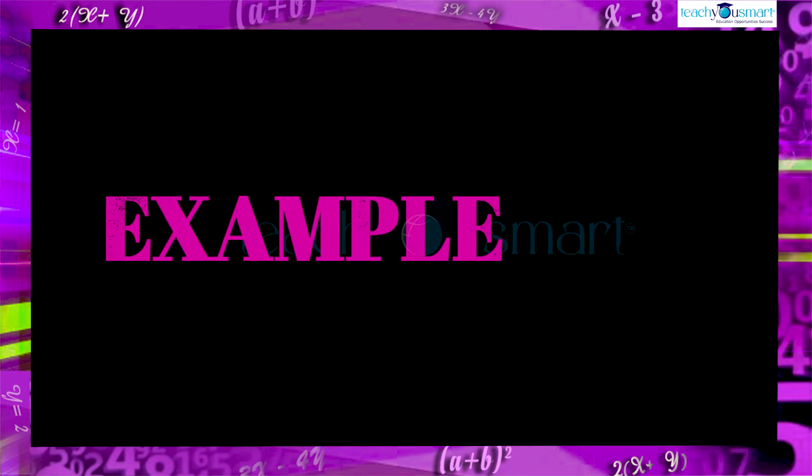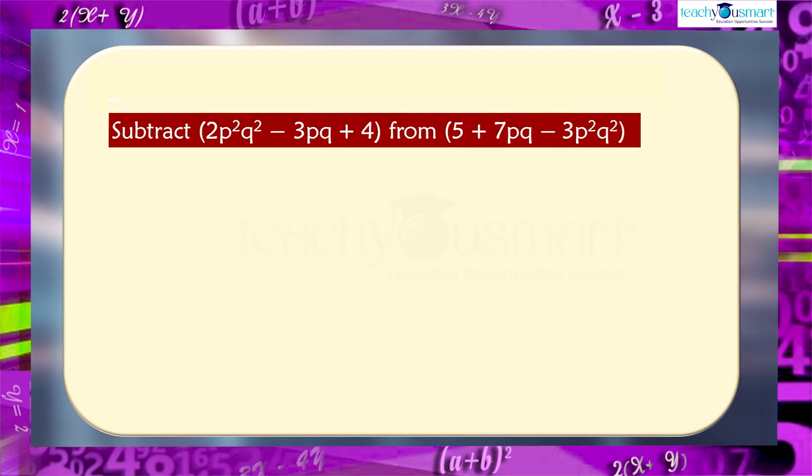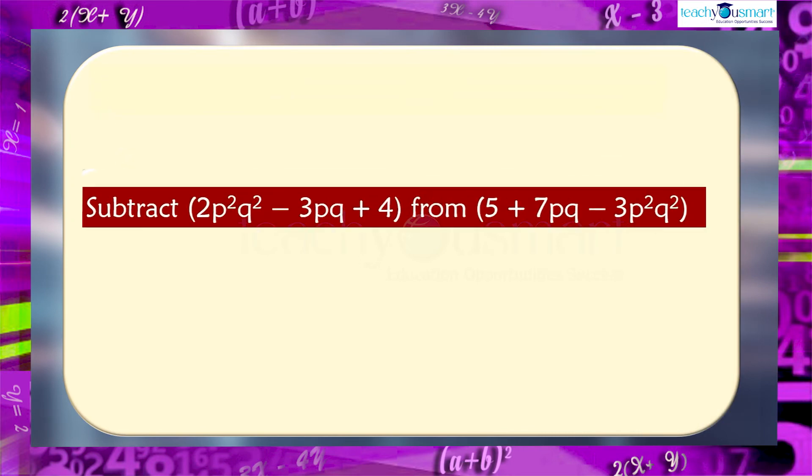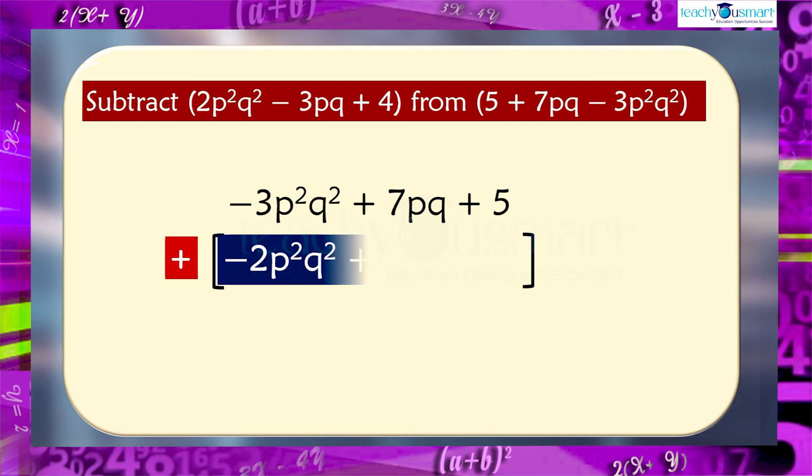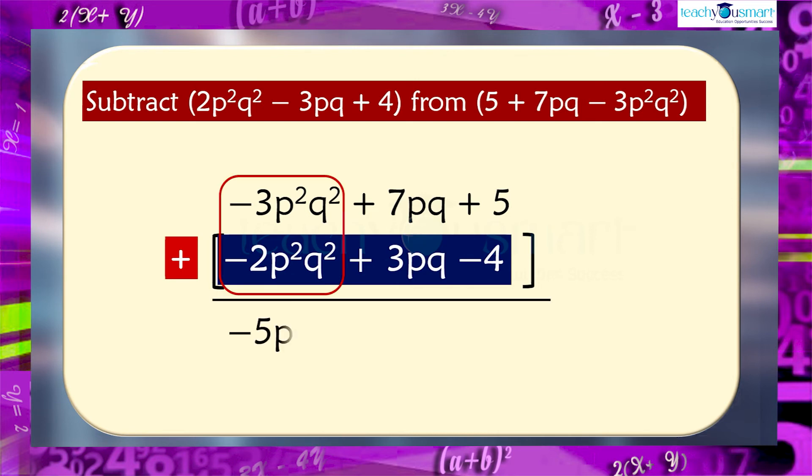Take another example. Subtract 2p square q square minus 3pq plus 4 from 5 plus 7pq minus 3p square q square. By arranging minus 3p square q square plus 7pq plus 5 minus 2p square q square minus 3pq plus 4 equals minus 3p square q square plus 7pq plus 5 plus minus 2p square q square plus 3pq minus 4 equals minus 5p square q square plus 10pq plus 1.